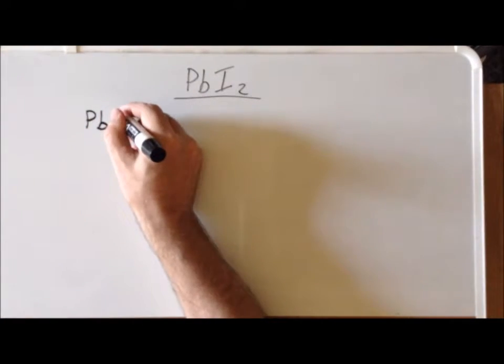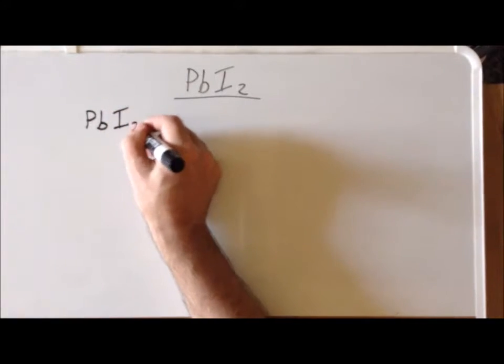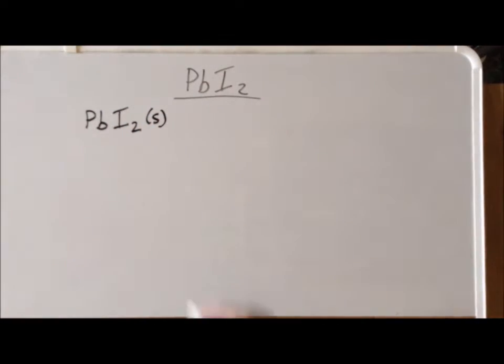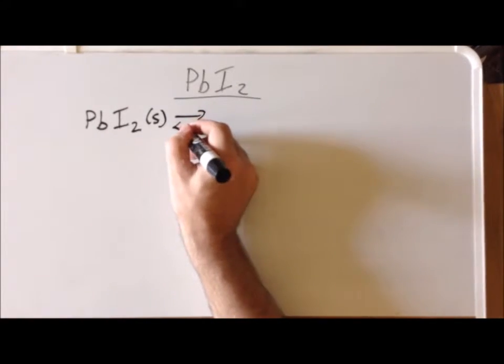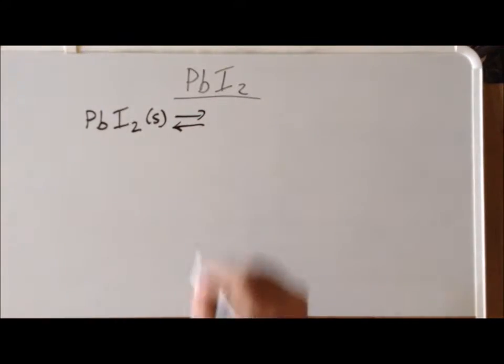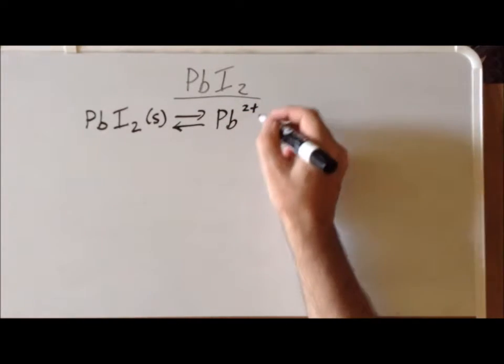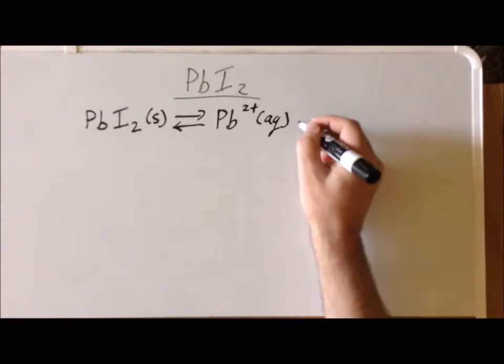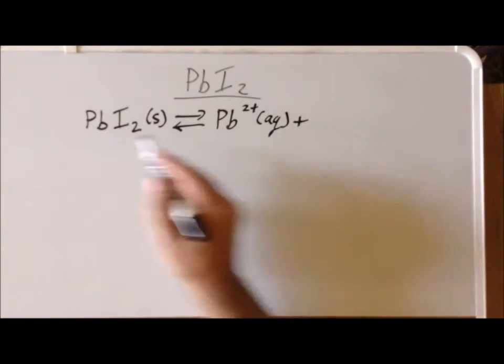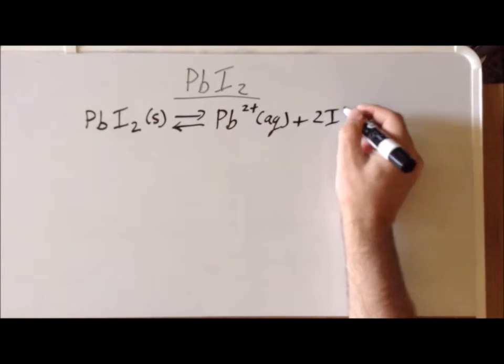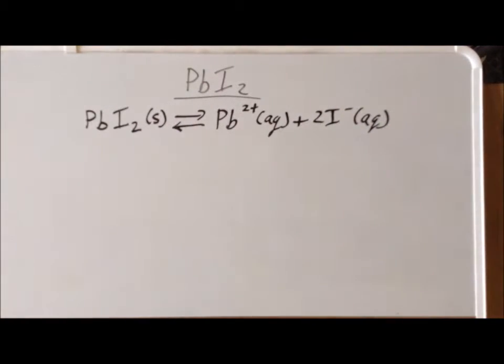We start with our lead iodide solid, and then upon dissolution, upon dissolving it in water, to a small extent it's going to break up into a lead 2+ ion, which is aqueous, plus two iodide ions. This example is different than our previous example, because in this case we have a divalent cation and two monovalent anions.